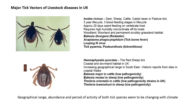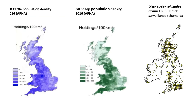The abundance and period of activity of both tick species seem to be changing with climate change, changing land use, rewilding, and increasing deer populations in the case of Ixodes ricinus. A slide depicting where livestock is raised in the UK — mostly on the western side — overlaid with a PHE map of Ixodes ricinus findings shows that these overlap to quite some degree.